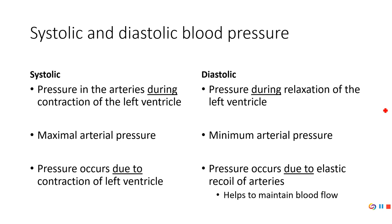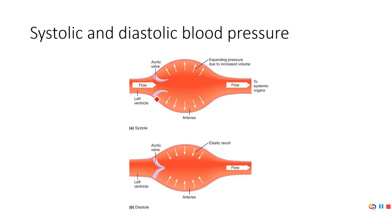What causes diastolic blood pressure? The answer is elastic recoil of the arteries. The arteries expand to accommodate the blood pushed in during systole, and their elastic recoil maintains pressure and prevents it from dropping to zero — just like squeezing a filled water balloon still produces pressure from the recoil of the balloon itself. The aortic valve is closed during diastole, so this elastic recoil drives continued blood flow. This leads into the concept of mean arterial pressure.